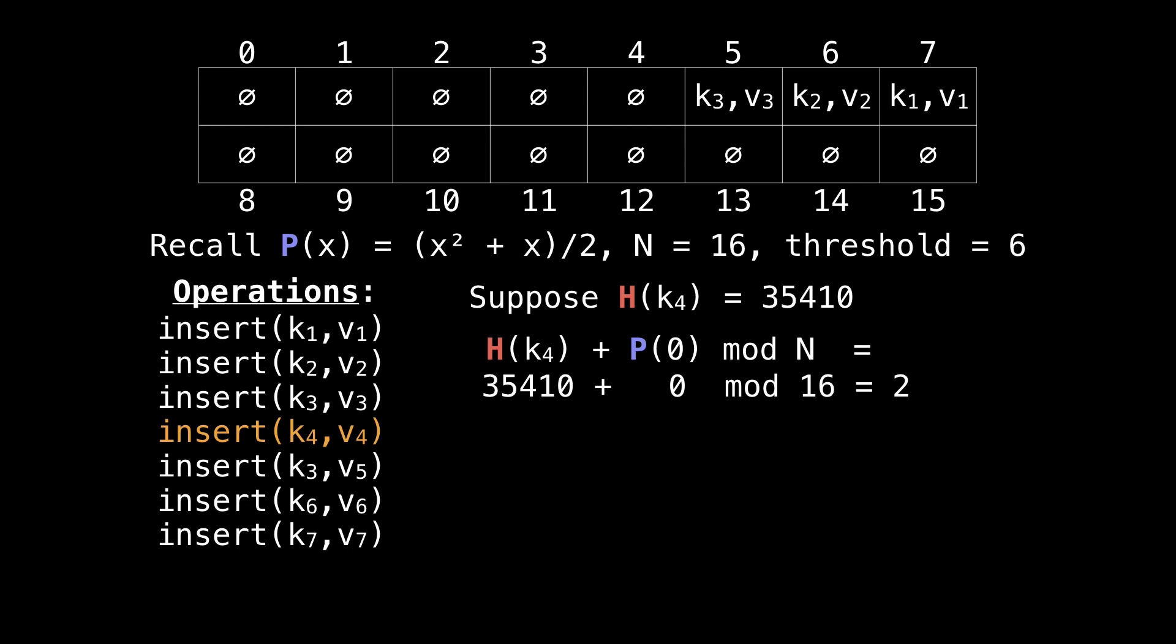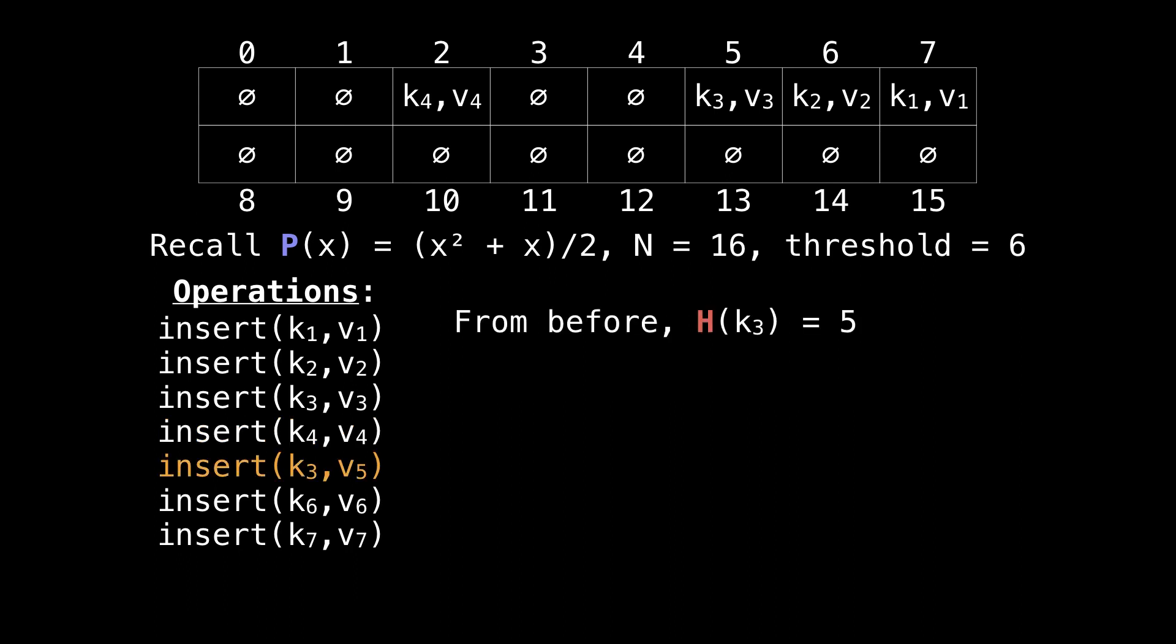When we mod that by 16, that gives us position 2. So we're going to insert k4, v4 at position 2. We've already seen k3, and we know its hash value is equal to 5.